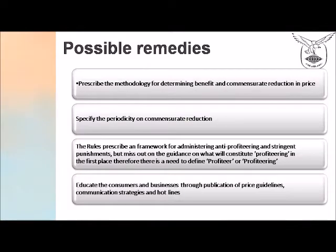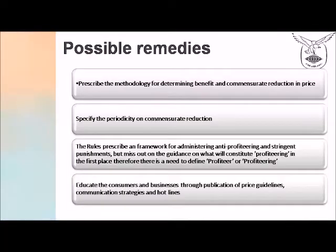Possible approaches to dealing with the anti-profiteering provisions: the authority should actually prescribe the methodology for determining the benefit and the commensurate reduction in price. It should also specify the periodicity of the commensurate reduction — it is not necessary that you pass on the reduction forever; you might enjoy the benefit over a transitionary period, after which all prices are likely to stabilize. The rules, while prescribing the framework for administering anti-profiteering and the consequences thereof, miss out on guidance on what will constitute profiteering and do not even define what is profiteering or who is a profiteer. I might make a small profit of maybe 100 or 200 rupees — maybe 0.5% of my total profits — but is that really profiteering? The government needs to spell out very clearly what is profiteering and who is a profiteer.